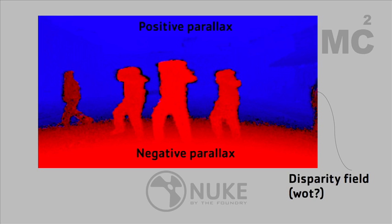The disparity field is a measure of how far a pixel travels between the left view and the right view — the offset between the two views on a per-pixel basis. I've actually cheated on this shot because it doesn't have as much positive and negative parallax as I've shown here; I've reconverged it to make it look more interesting. The strength of the disparity field shows how much a pixel travels between left and right view. Negative parallax comes out in front of the screen at the audience; positive parallax in the background sits behind the screen plane.